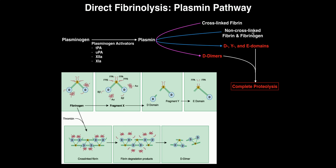If we start with non-cross-linked fibrin or fibrinogen, we follow this top pathway. Initially, these little red pieces get clipped off by plasmin, generating something called fragment X. Fragment X can further be degraded by plasmin — we can hydrolyze off one of these D-domains. The other piece is called fragment Y. The D-domain is a separate identifiable fibrinolysis product. Fragment Y gets degraded further: after those little pieces are hydrolyzed off, what remains is the E-domain.